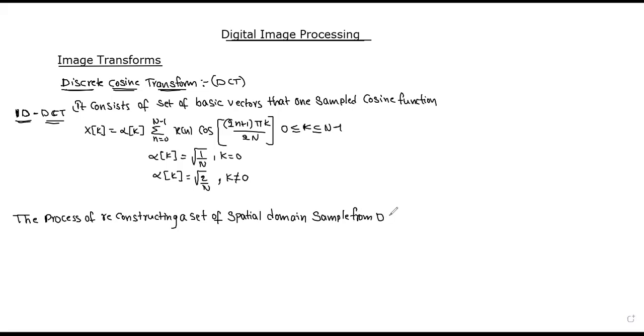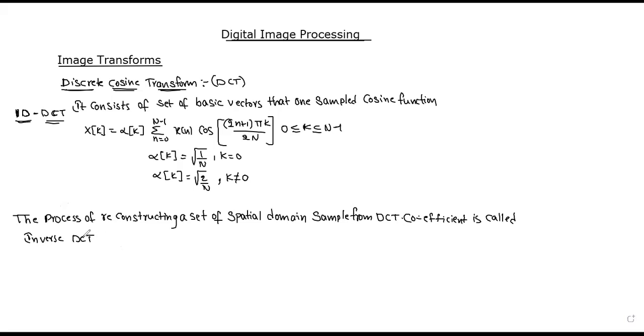The sample from the DCT coefficients is called the inverse DCT. So, the inverse DCT takes the DCT coefficients and reconstructs the original signal.